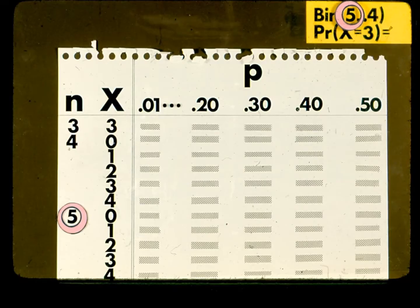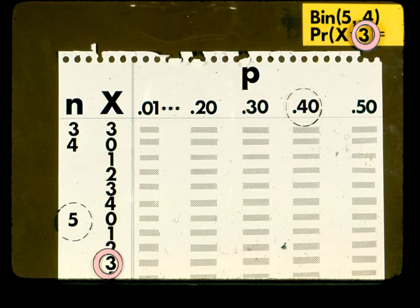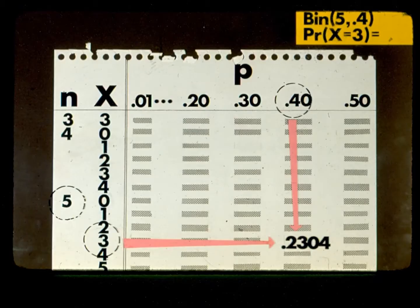Here is the binomial table similar to those found in most statistics texts. First, look up N equal 5. Then look up P equal to 0.4. Third, look up X equal 3. The intersection of the correct row and column gives the binomial probability of 3 out of 5 patients having wound disruption given that P equals 0.4. The answer is 0.2304.